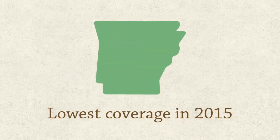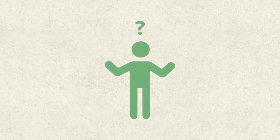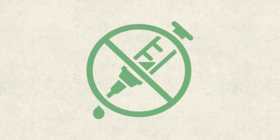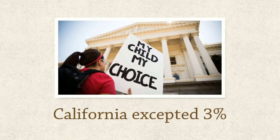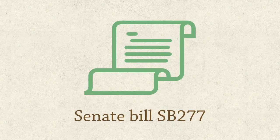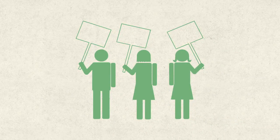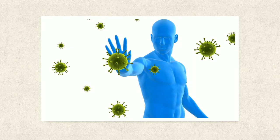As of 2015, Arkansas had the lowest coverage percentage at 75.3%. There are some states that may grant exceptions due to personal belief, religion, or medical reasons. Most parents who exempt due to personal beliefs might exempt because they simply don't want to vaccinate, not because they have a reason. In California, 3% were exempt. But on June 25, 2015, Governor Brown signed Senate Bill SB-277. This bill changes immunization requirements — so no more exceptions, unless you're homeschooled or for medical reasons.